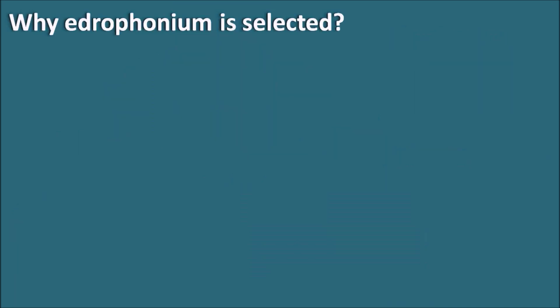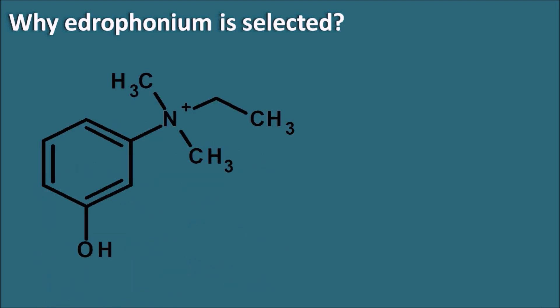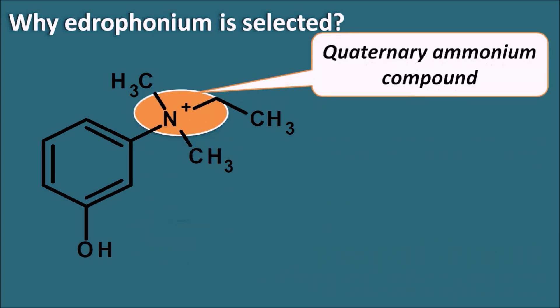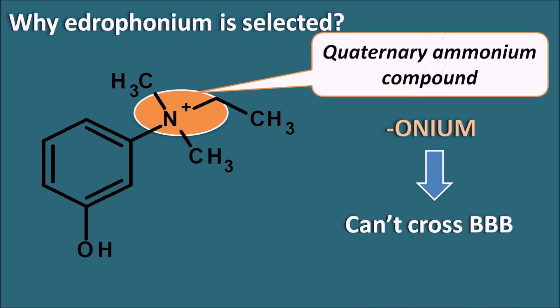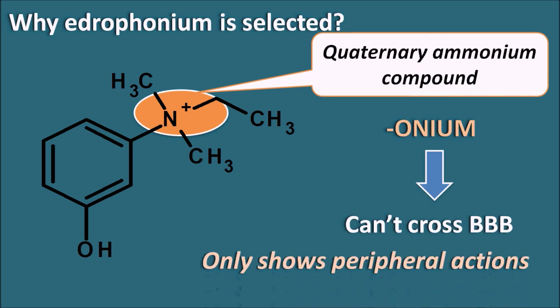Why is Edrophonium selected for this diagnosis? Different types of acetylcholinesterase inhibitors exist, but Edrophonium is specifically selected. Looking at the structure of Edrophonium, we can observe a quaternary ammonium group, which is why the name ends with the suffix 'onium.' Since this quaternary ammonium group is ionic in nature, it cannot cross the blood-brain barrier. So Edrophonium can show only peripheral actions with very little central action, which is advantageous since it should act peripherally to increase muscle strength.